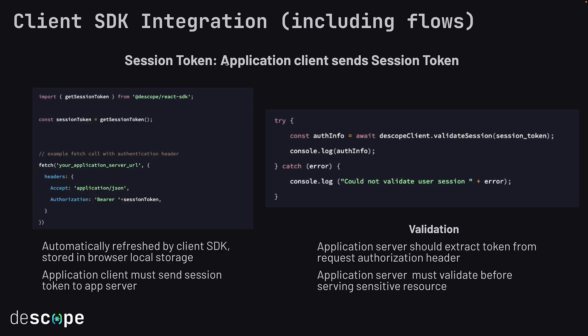Your application's responsibility is to send the session token from the application client to the application server. You can do this by getting the session token with a specific call and sending it in the authorization header. On the application server side, you should extract the session token from the authorization header and validate the session using the validate session call from the Descope backend SDK.